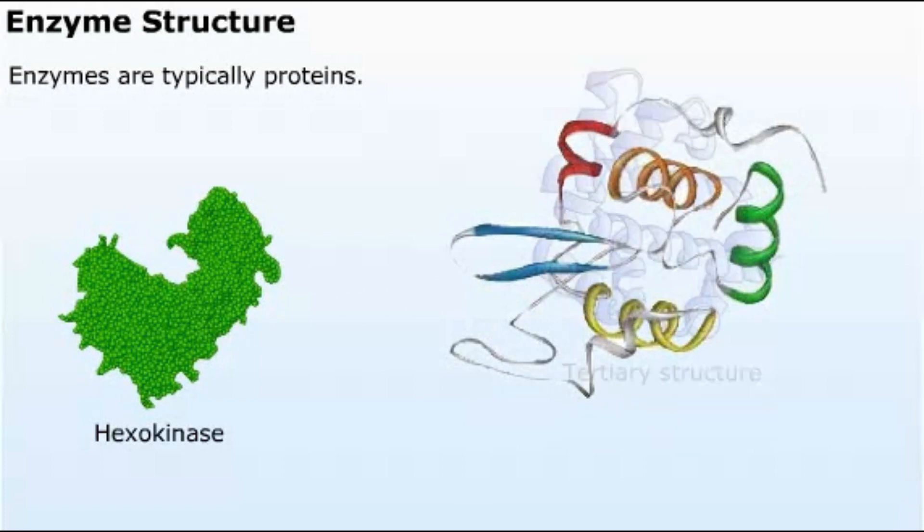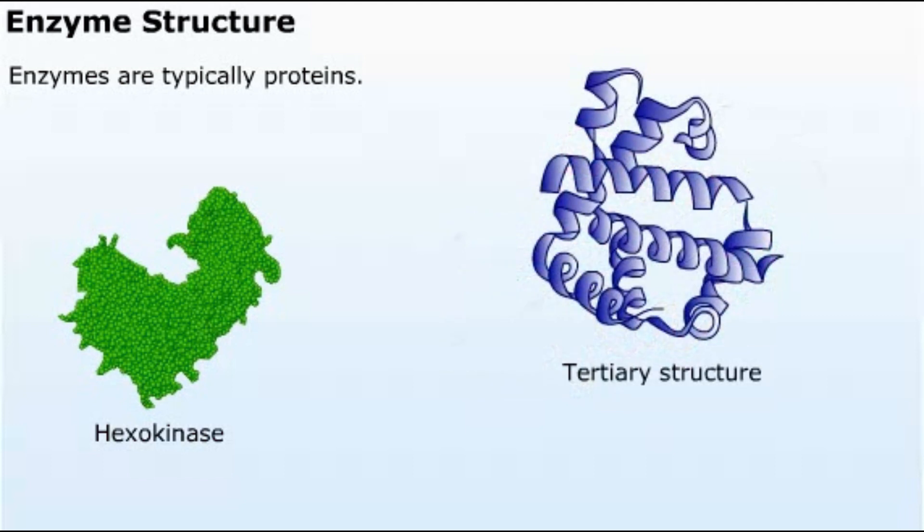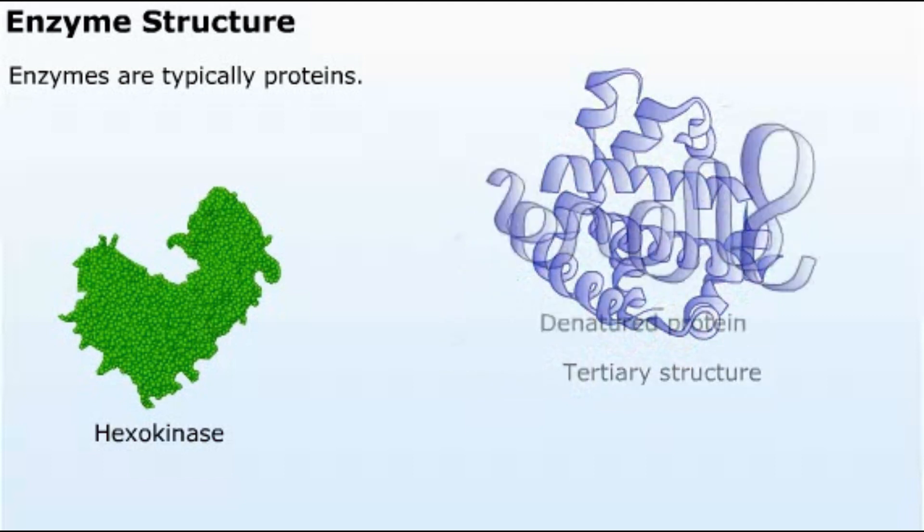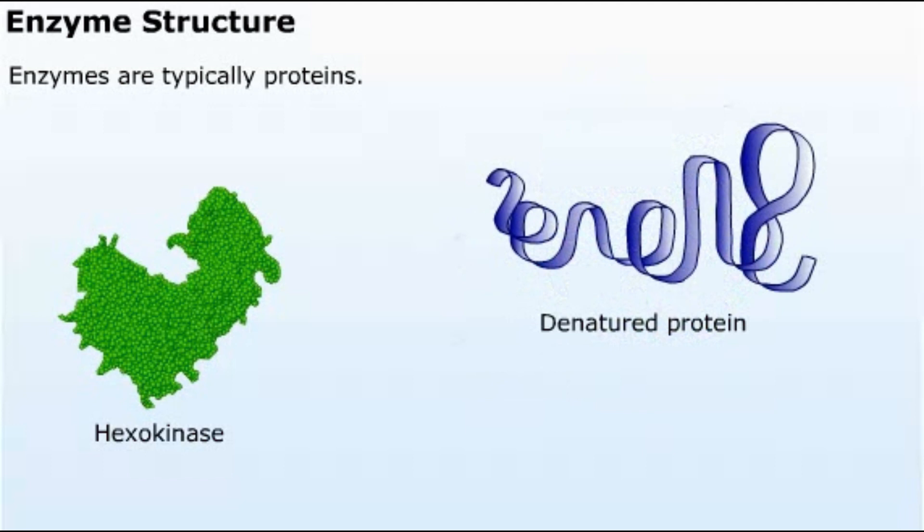The tertiary structure of a protein is important for its function as an enzyme. When a protein unfolds, the structure is lost and the protein is no longer active.